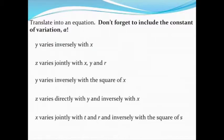The biggest thing to remember is that every single problem that we do with direct or inverse or joint variation will always contain the constant of variation, which we use the letter A to represent. Even though you don't see an A in any of these examples, every single one will have that constant of variation.